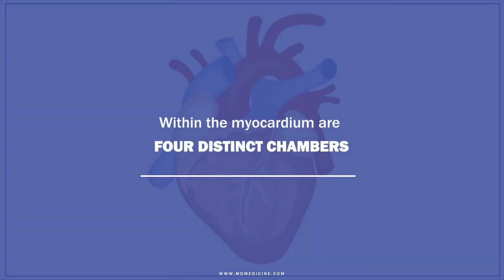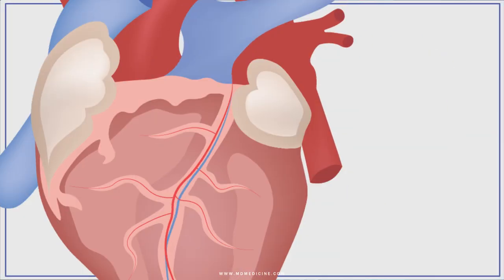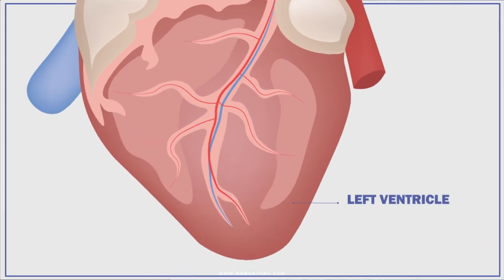Within the myocardium are four distinct chambers: the right atrium, the left atrium, the right ventricle, and the left ventricle.